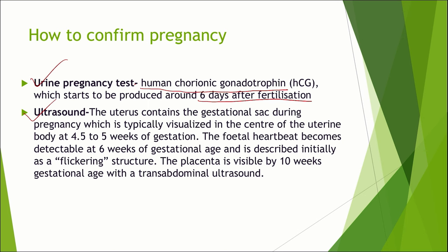This test is routinely done after any delayed menstrual cycle when they are expecting a pregnancy. The second common method to confirm pregnancy is ultrasound. The uterus contains the gestational sac during pregnancy, which is typically visualized in the center of the uterine body at 4 to 5 weeks of gestation. The fetal heartbeat becomes detectable at 6 weeks of gestational age and is described initially as a flickering structure. The placenta is visible by 10 weeks with a transabdominal ultrasound. The presence of fetal heartbeat not only confirms the pregnancy but also confirms a viable fetus.